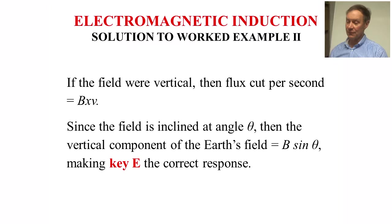The solution to worked example two: if the field were vertical, then simply the flux cut per second is equal to BXV. But the field is inclined at angle theta, then the vertical component of the Earth's field is B sin theta, making key E the correct response.